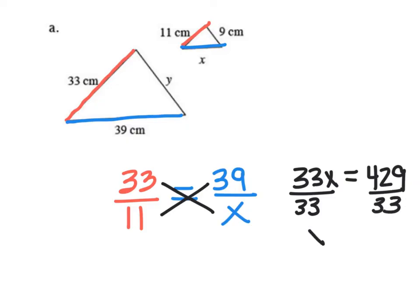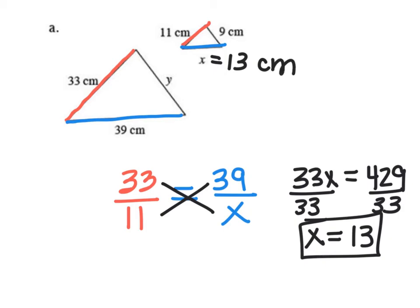So on the first side, we just end up with X equals, and then 13. So that missing side length is 13 centimeters. And I just solved that using proportional reasoning.